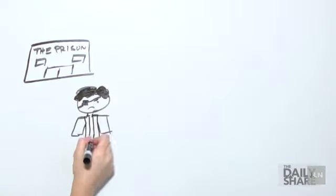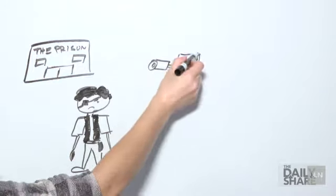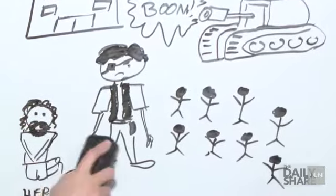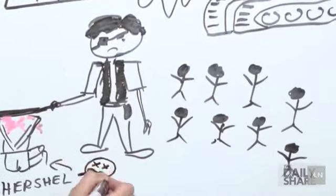As they get the outbreak under control, the governor shows up with his tanked army and two hostages to force Rick's group out of the prison. Rick tries to talk to the governor, but the jerk ends up beheading Herschel in front of everyone.